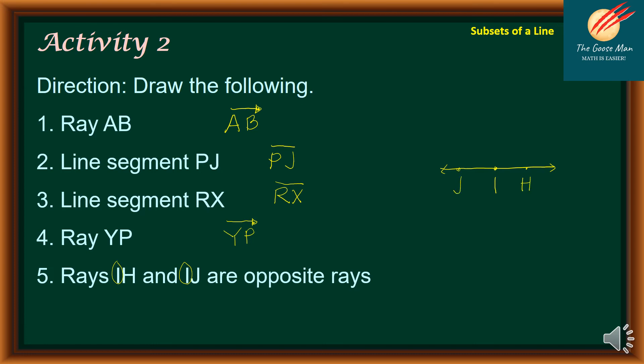Clearly, we can say that ray IH is opposite to ray IJ. On the other way around, I can draw like this. I have here still I in the middle, then we have H and J. You can see that ray IH and ray IJ are actually opposite rays.